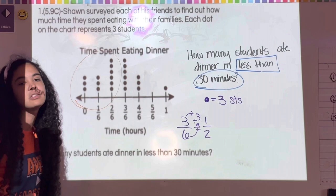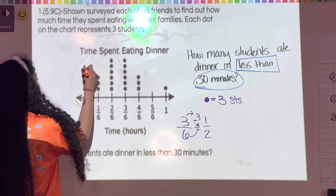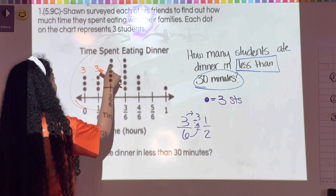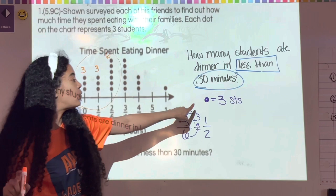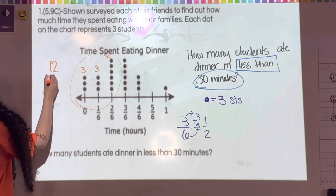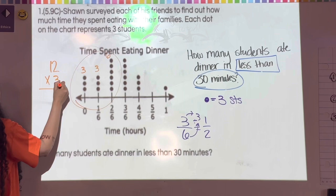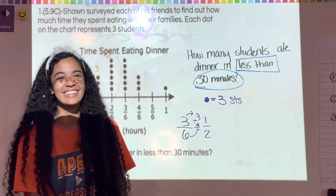Now I count the dots in those columns. At zero minutes, nobody ate. Then I count: one, two, three in one column and one, two, three in another — six dots total. But remember each dot equals three students, so I multiply 12 dots by three. Three times twelve equals 36.